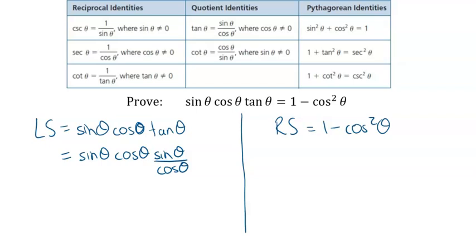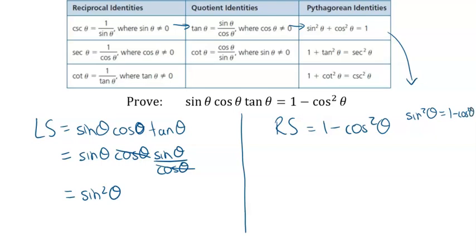I'm going to let everything be represented in terms of sine and cosine. Using this identity, tan becomes sine over cosine. The cosine in the numerator cancels with the cosine in the denominator, and what I'm left with on the left side is sine squared theta. On the right side, taking the Pythagorean identity — sine squared theta plus cos squared theta equals one — and rearranging, I get sine squared theta equals one minus cos squared theta. So I can replace the right side with sine squared theta, and we've already proven this is true.